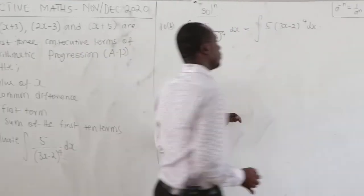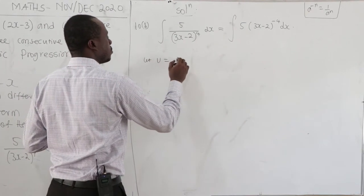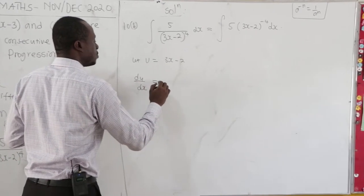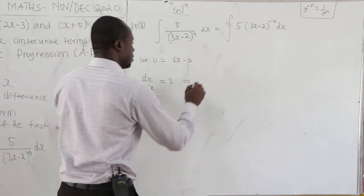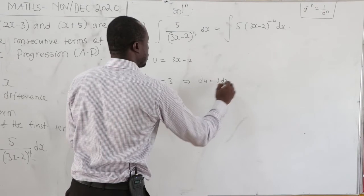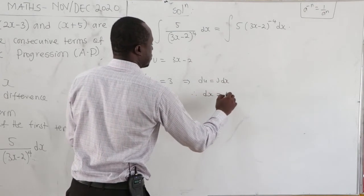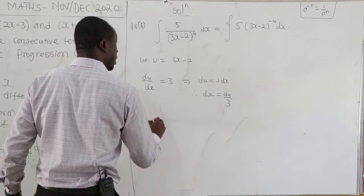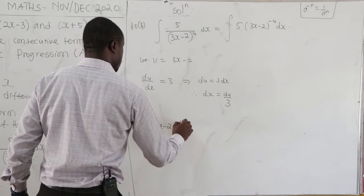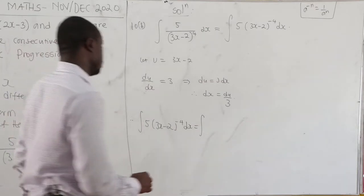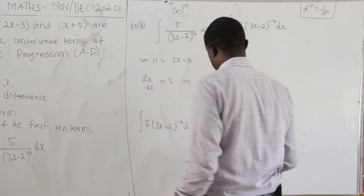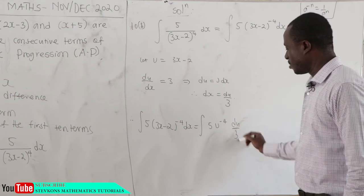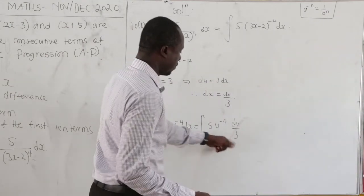Let u equal 3x minus 2. Then du/dx equals 3, which implies dx equals du over 3. We substitute to get the integral of 5u to the power of negative 4 times du over 3.